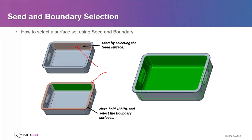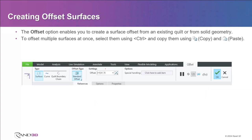Depending on the shape of the model, you might need more than one boundary. With just two mouse clicks, you can pick all those interior surfaces. You pick one as the seed, hold the shift key, pick as many boundaries as you need, let go of the shift key, and it picks the seed plus everything connected — up to but not including the boundaries. This seed and boundary can be used anytime you're picking adjacent connected surfaces for any reason.